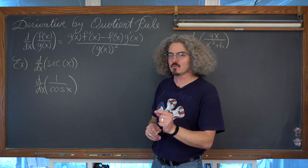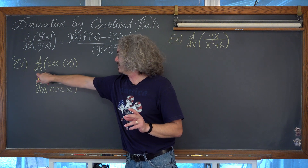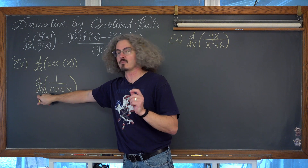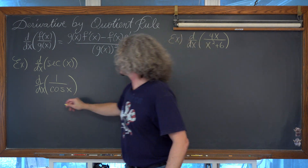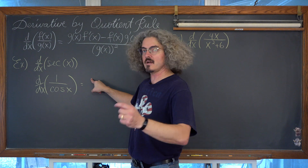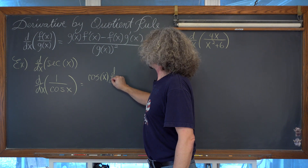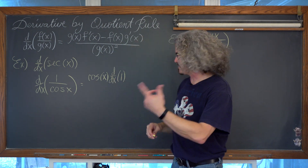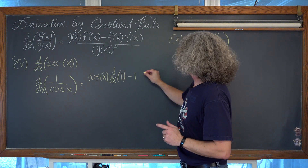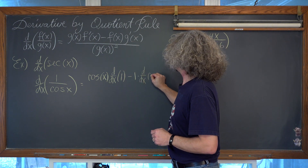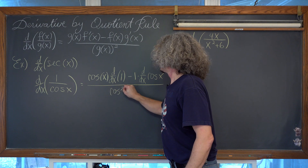Once you learn the chain rule you may work this out differently, but we don't know that yet. So I'm going to recognize that the derivative of secant has been converted into the derivative of the function 1 divided by the function cosine of x. Following the quotient rule formula, this is going to be equal to low — the denominator, cosine of x — times d high, the derivative of the numerator; so low d high, minus high — the numerator is 1 — times d low, times the derivative of cosine of x, all over cosine squared of x.